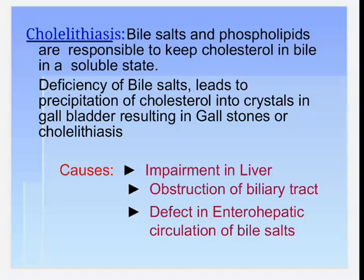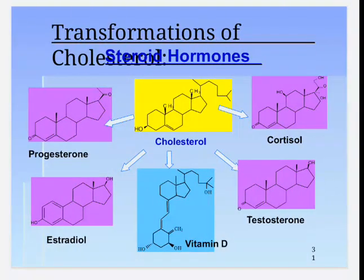Bile salts and phospholipids are responsible for keeping cholesterol in bile in a soluble state. A deficiency of bile salts leads to precipitation of cholesterol into crystals in the gallbladder, resulting in gallstones, or cholelithiasis. It is caused by impairment of liver function, obstruction of the biliary tract, and defects in enterohepatic circulation of bile salts.